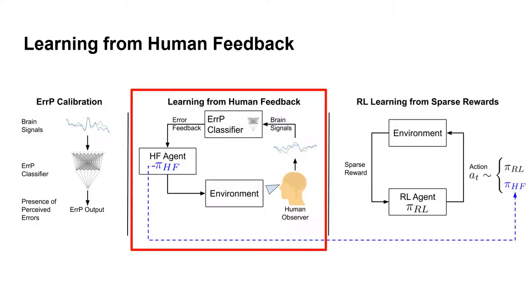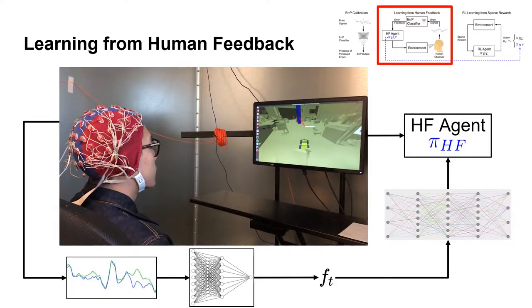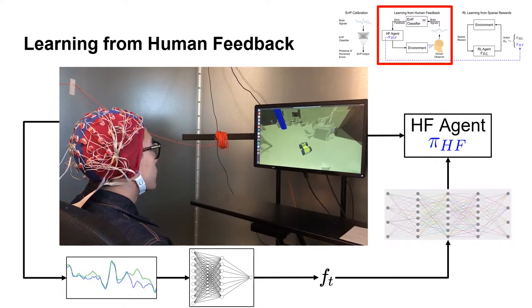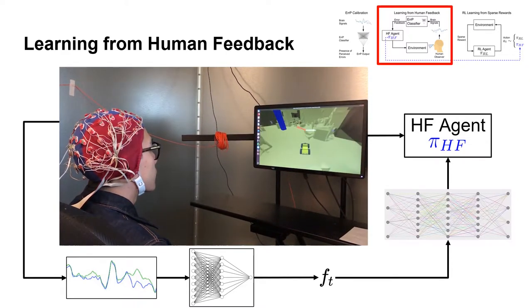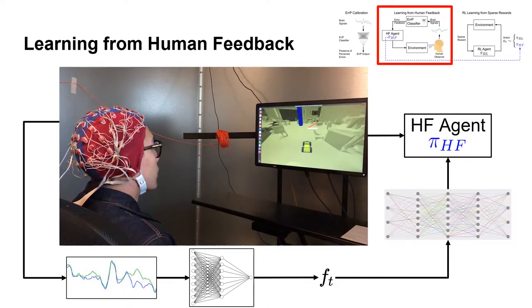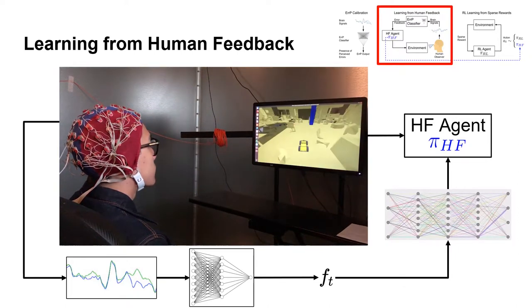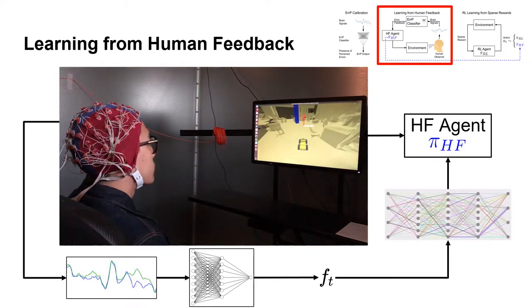In the second stage, we use supervised learning to obtain a policy from the human feedback. To achieve this, the subject watches the agent as it learns, and we use the trained ERRP classifier from the previous step to get evaluative feedback from the human observer. The decoded feedback is continuously used to update the agent's policy using supervised learning.